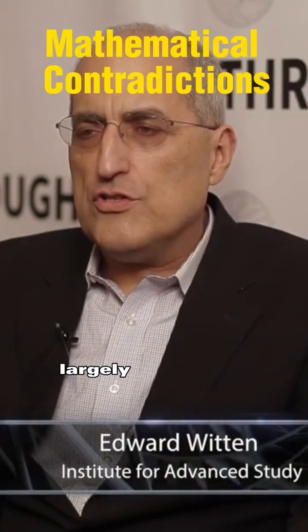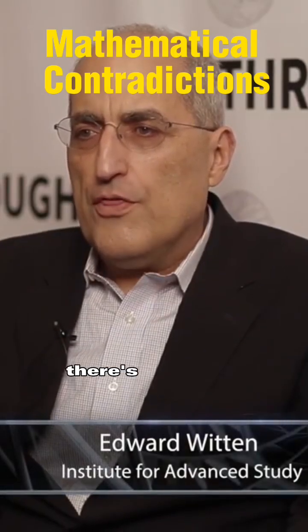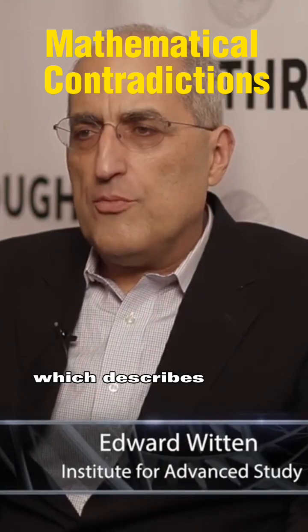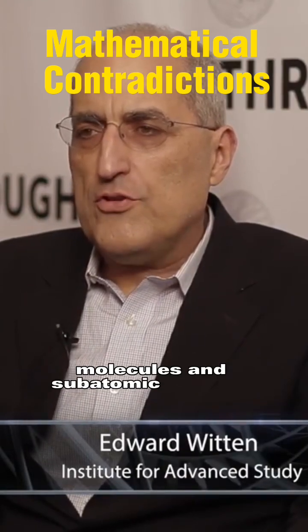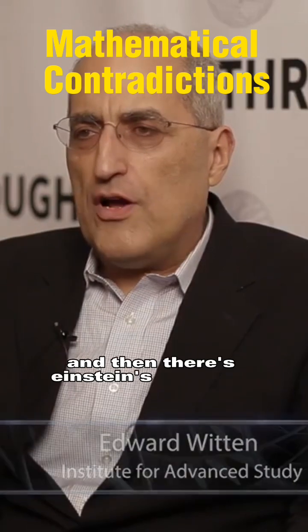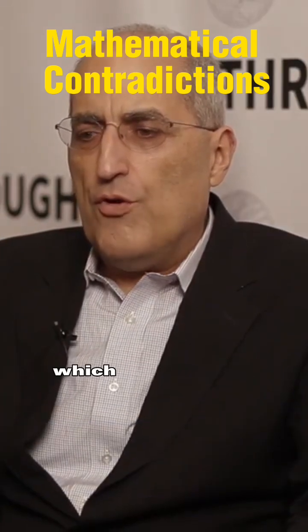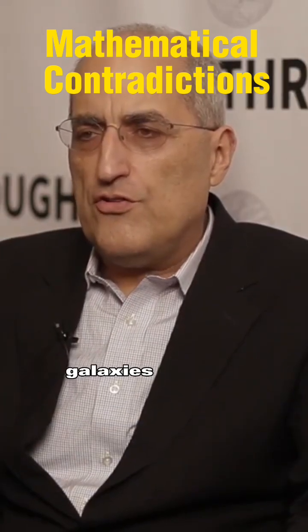20th century physics largely developed around two big theories. There's quantum mechanics, which describes atoms, molecules, and subatomic particles. And then there's Einstein's theory of gravity, which is applied to stars, galaxies, and the universe as a whole.